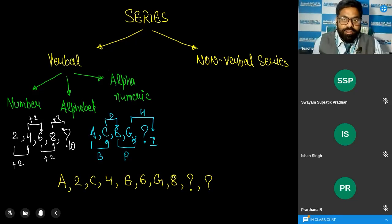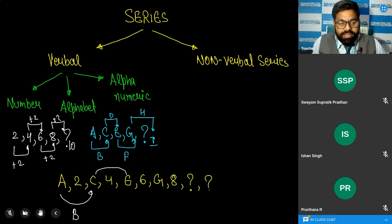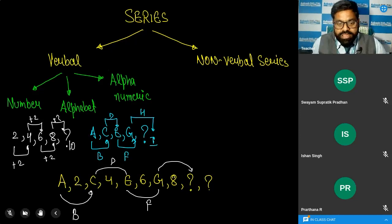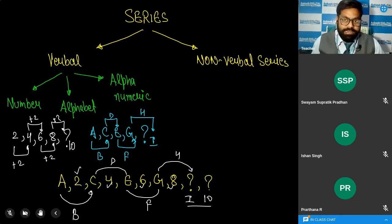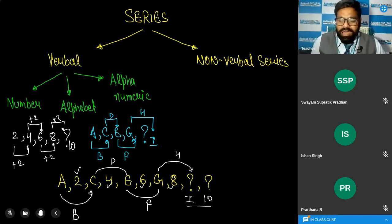The alphabetical logic and the numerical logic are handled separately. From A to C we leave B, C to E we leave D, E to G we leave F, so G, H, I — I is next. For numbers: 2, 4, 6, 8, so 10 is next. Therefore I and 10 is the correct answer.